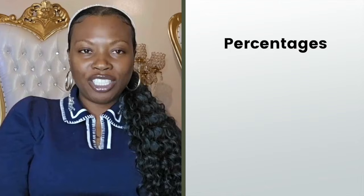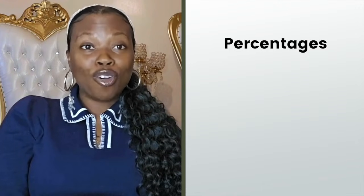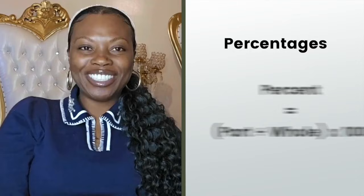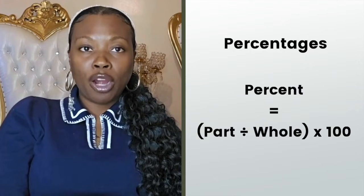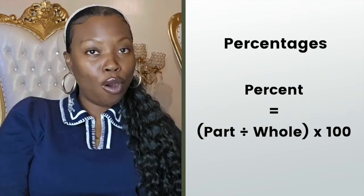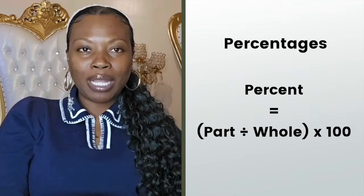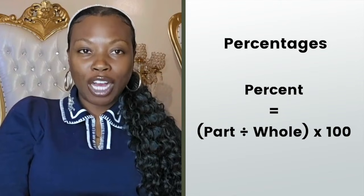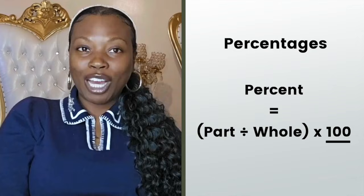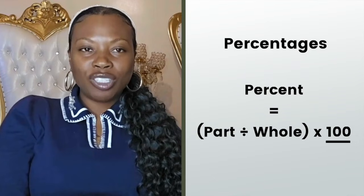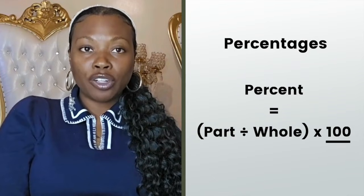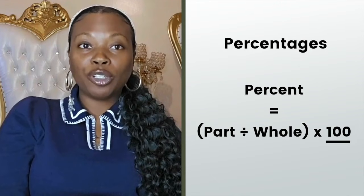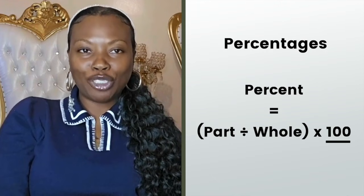Let's talk percentages. These show up all over the ASVAB, and the good news is they're not as scary as they look. To find a percent, divide the part — the smaller number — by the whole — the larger number — then multiply by 100. Remember that a percent is always something out of 100. That's why multiplying by 100 is the very last step. Just think of it like this: first find your fraction, part over whole, then crank it up into a percent by multiplying by 100.